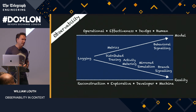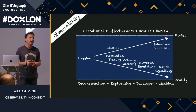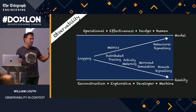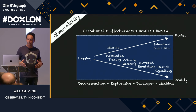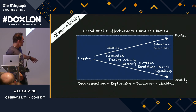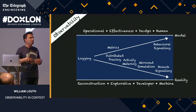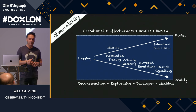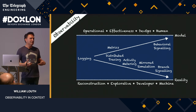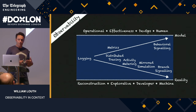Observability is really taking two directions. One direction is where we're going from logging to tracing to metrics and further down — the bottom chart — which is really about reconstructive, explorative data analysis, focused on developers for machines. Even today, a lot of the tooling is geared towards humans. Unfortunately, this is not very effective for DevOps.